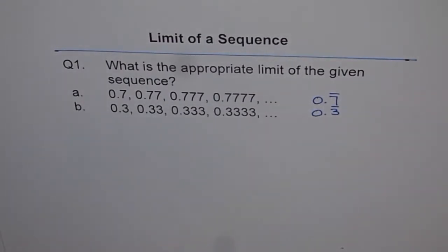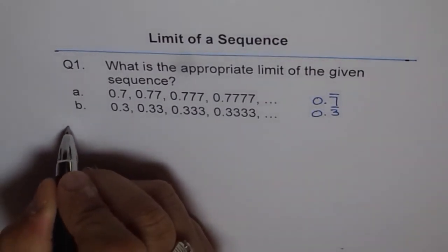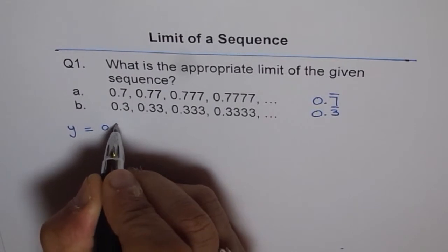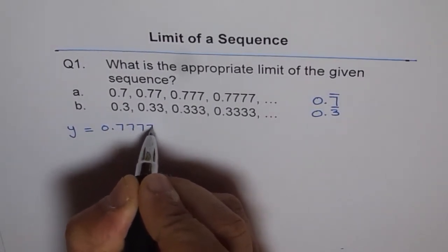Now part a of finding the limit is to convert this sequence into a fraction. That is what we will try to do first. So let us say that y equals 0.7777 and so on.